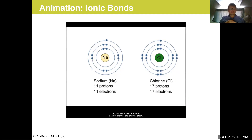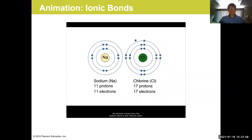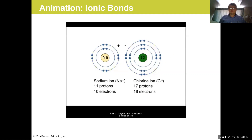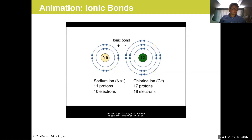In the ionic bond between sodium and chlorine, an electron moves from the sodium atom to the chlorine atom, and the outer shells of both atoms are now complete, containing eight electrons. The chlorine atom now has 18 electrons but only 17 protons, giving it a net negative charge — it becomes a negative ion. The sodium atom has lost an electron, leaving it with an extra proton and a positive charge — it becomes a positive ion. Ions with opposite charges attract each other, forming an ionic bond, and these ions combine to form sodium chloride — ordinary table salt.